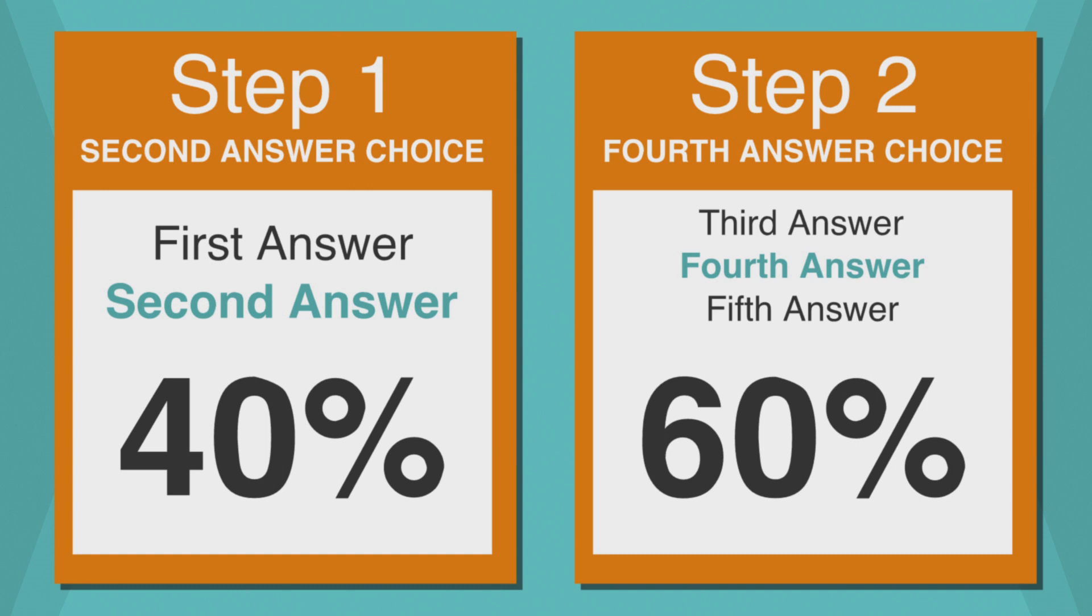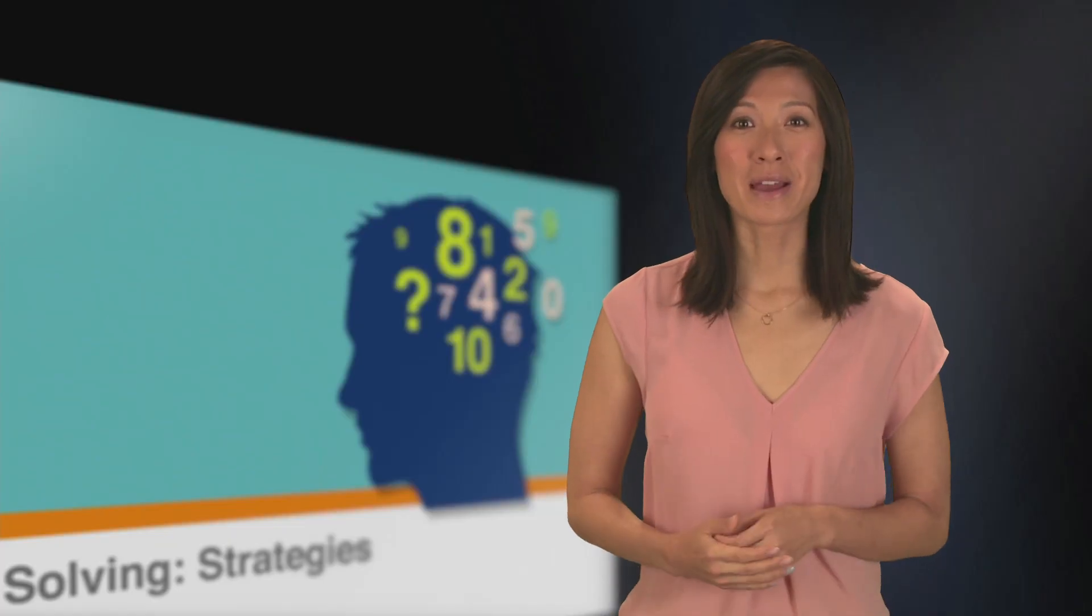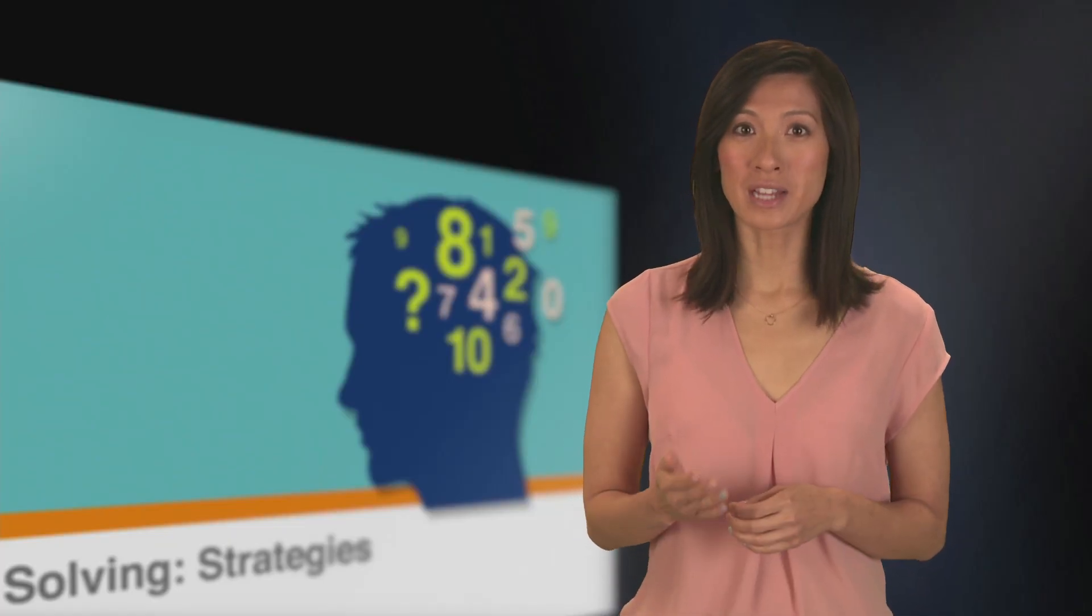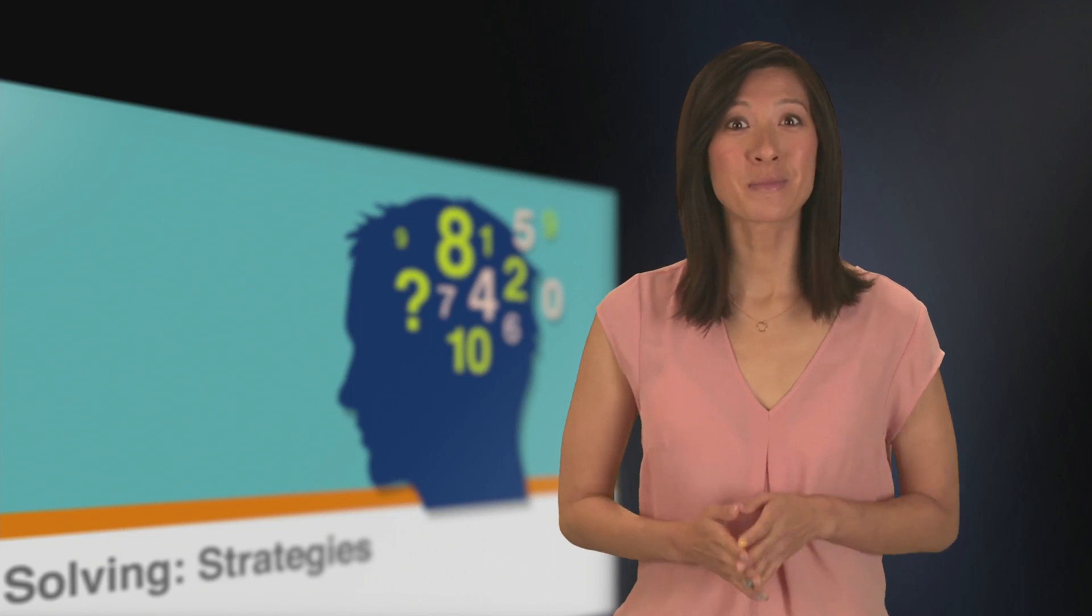Since step 2 determines which of the remaining three answer choices is correct, we have a 100% chance of finding the answer in only two tries. Testing all five answer choices isn't necessary. Using this method of backsolving ensures that you save time, so you have enough time to move on to the rest of the questions. Now let's go back to our problem.